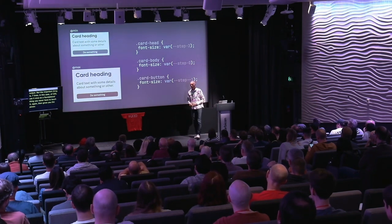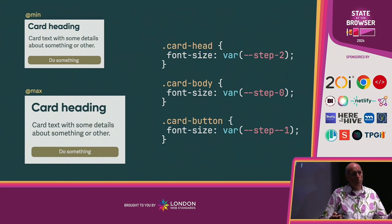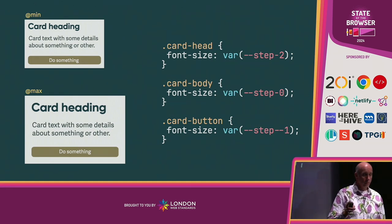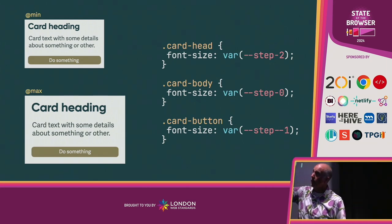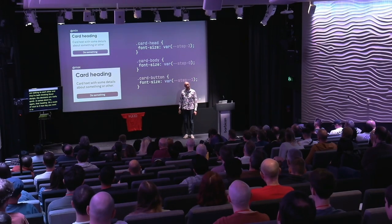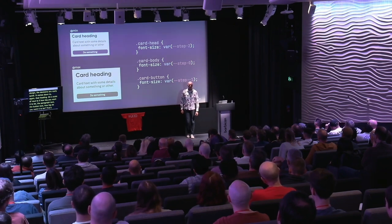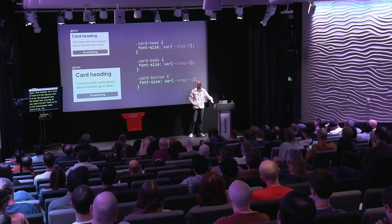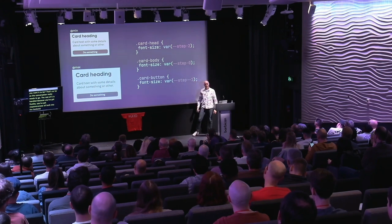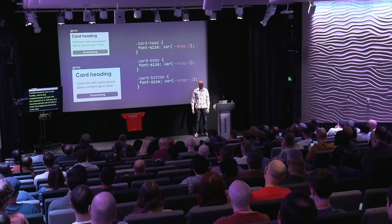Let's think about designing a basic component in a design system. If the designer and developer — who may or may not be the same person — are talking to each other and they're both thinking fluid design, the decisions are really quick. It comes down to: that heading, on a scale of 0 to 5, how big do you want it to be? Similarly the paragraph text, the button text — on a scale of 0 to 5, how big do you want it to be? That's as far as the conversation really needs to go. There are no media queries — the responsiveness is all built into the back end.